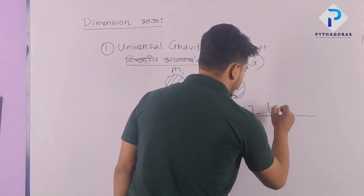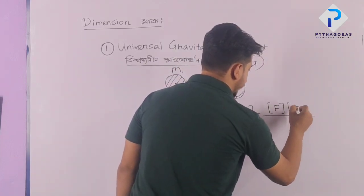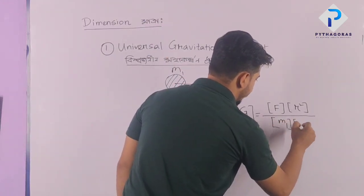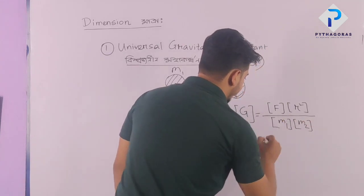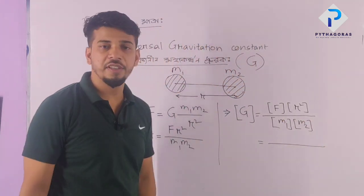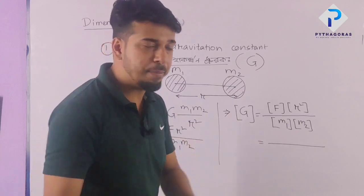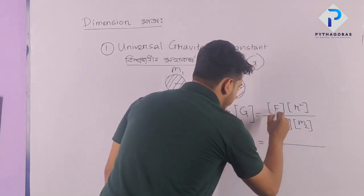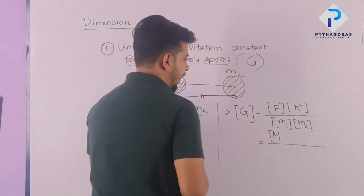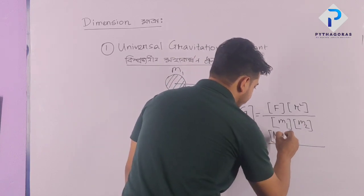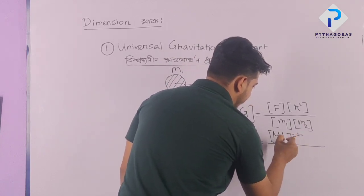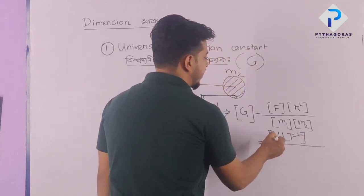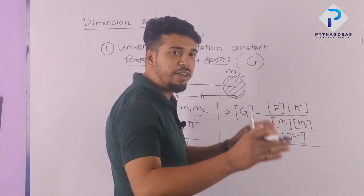Dimension of G is equal to dimension of F into R square divided by M1 into M2. F is equal to M times A — mass times acceleration. So F dimension is M times L T to the power minus 2, since acceleration dimension is meter per second square.